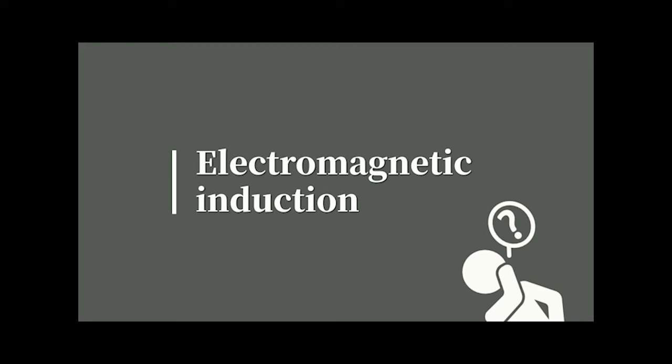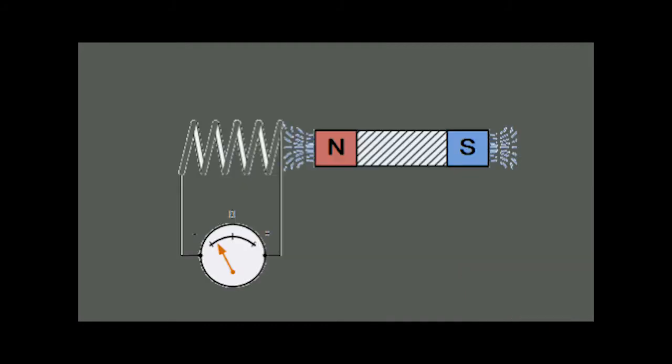What is electromagnetic induction? By Faraday's law, putting a loop of wire into a changing magnetic field induces a current in that wire. Let us discuss it in detail by looking at the following slides.